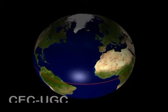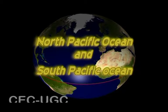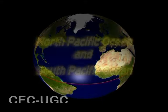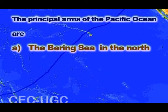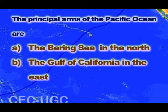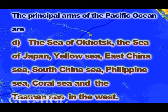The equator subdivides the Pacific Ocean into the North Pacific Ocean and the South Pacific Ocean. The principal arms of the Pacific Ocean are the Bering Sea in the north, the Gulf of California in the east, the Ross Sea in the south, and the Sea of Okhotsk, the Sea of Japan, the Yellow Sea, East China Sea, South China Sea, Philippine Sea, Coral Sea, and the Tasman Sea in the west.